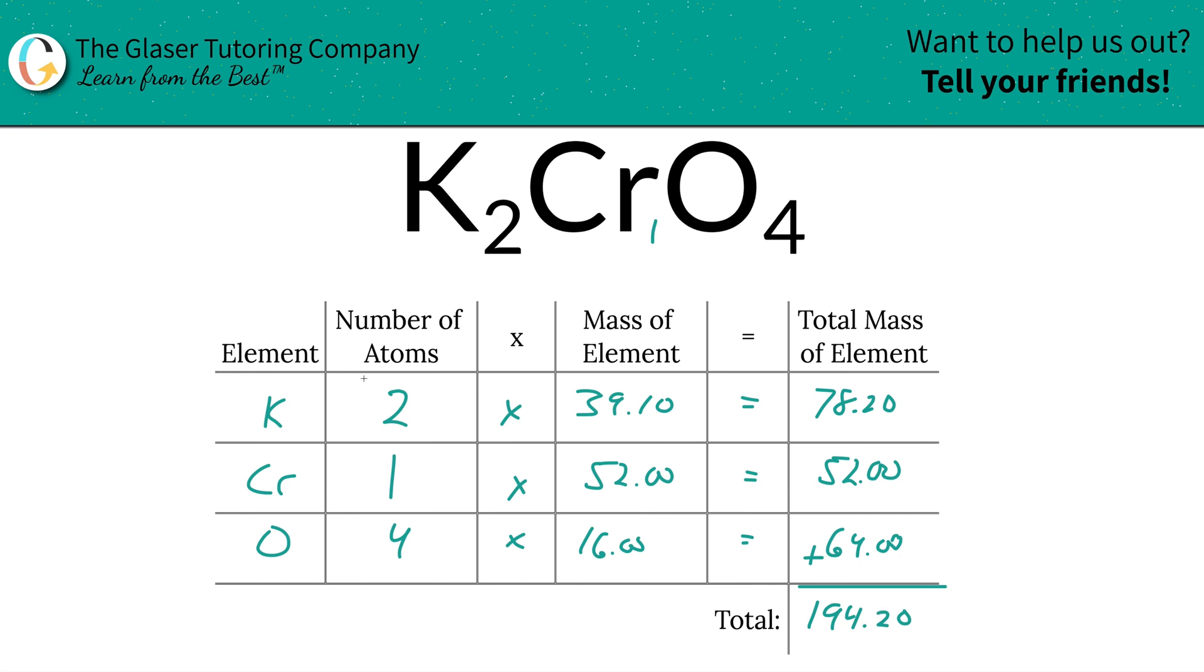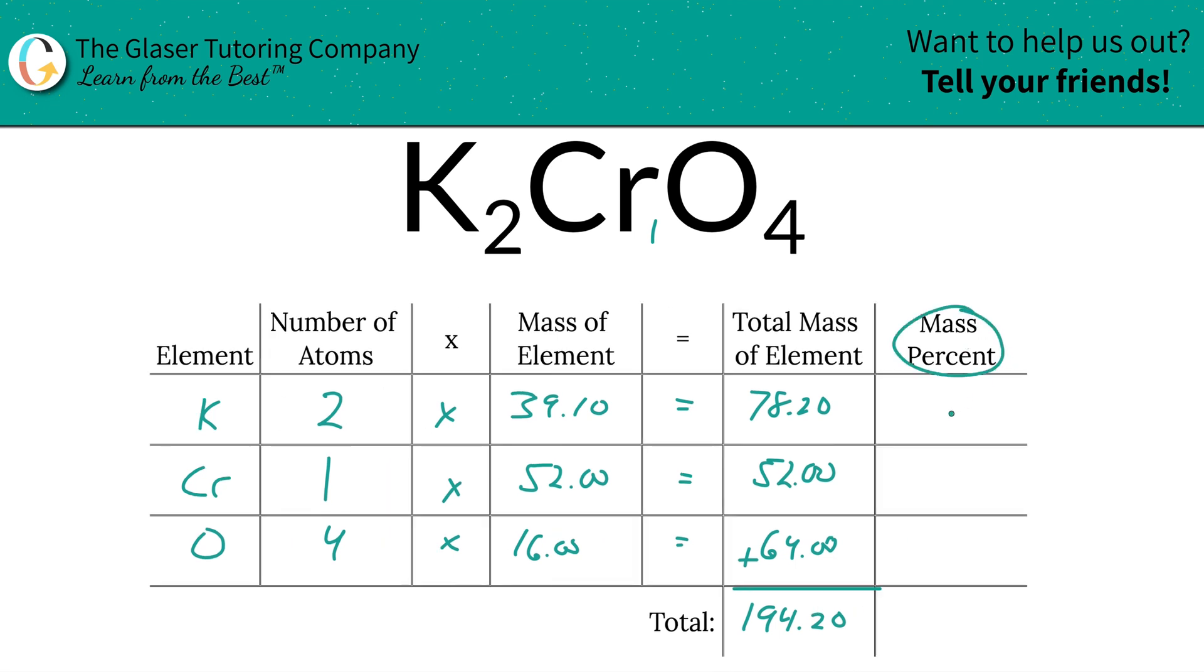To find the mass percent of, let's say, potassium, we simply take the total mass of potassium—78.20—and divide it by the total mass of the entire compound, 194.20. Multiply that by 100 and we find the percent. This is going to be 40.27 percent. That's the value for potassium.